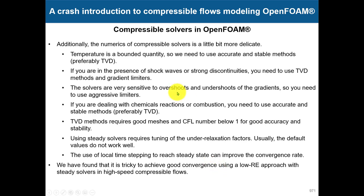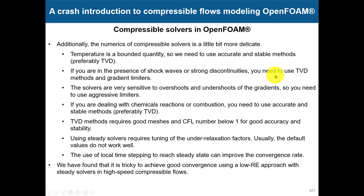Additionally, the numerics of compressible solvers are a little more delicate. Temperature is a bounded quantity, so we need accurate and stable methods. Preferably we use TVD methods — we studied these in module six. If shock waves or strong discontinuities are present, you need TVD methods plus gradient limiters — very aggressive gradient limiters — to avoid oscillations and divergence of your solution.